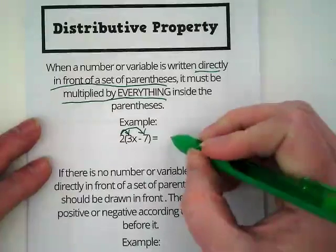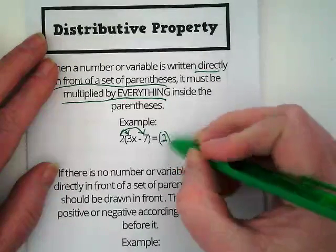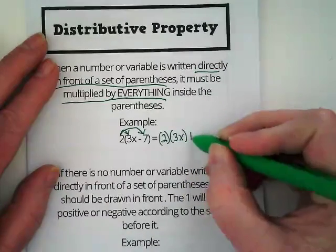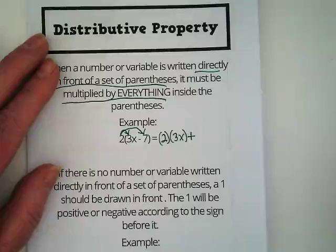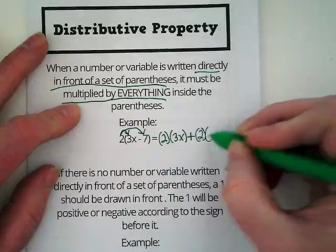We are going to rewrite it showing what we're doing here. We are multiplying 2 times 3x. And I'm using a plus sign to show we're combining this. We're multiplying 2 times negative 7.